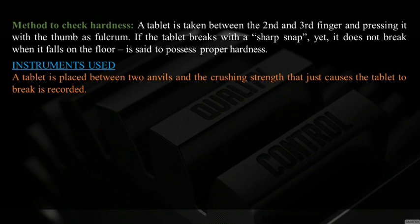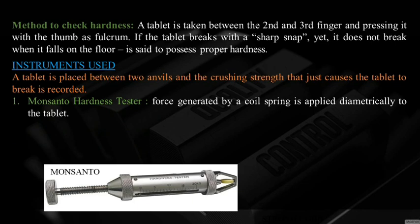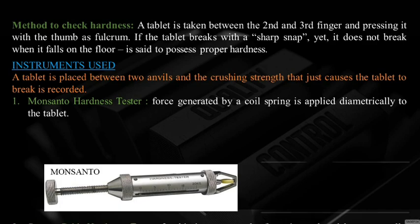For accurate measurement, a tablet is placed between two anvils and the crushing strength that just causes the tablet to break is recorded. The Monsanto hardness tester applies force via a coil spring diametrically to the tablet — it is the most commonly used and one of the earliest testers. The barrel contains a compressible spring held between two plungers; the upper plunger contacts the tablet and a zero reading is taken. The lower plunger is forced against the spring until the tablet fractures, and the pointer moves along a gauge in the barrel to indicate the force in kilograms.